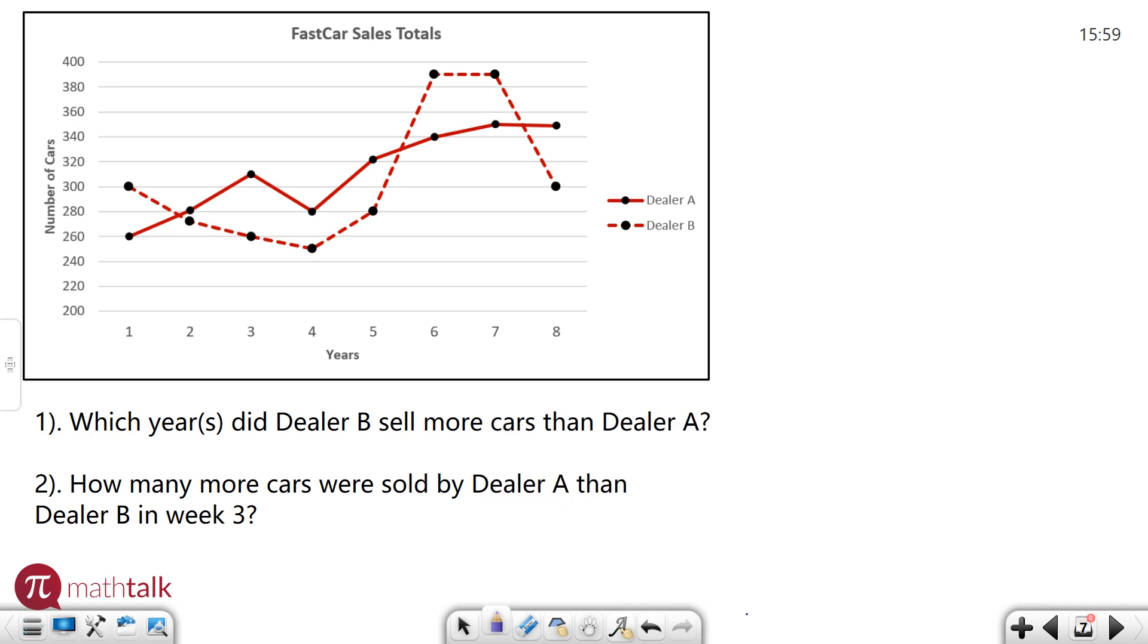So dealer B needs to be higher than dealer A, which means the dotted line has to be higher than the solid line. So let's find all those points. The dotted line is higher, let's see, here and here. Looks like everywhere else the solid line wins. So the years for that are going to be, let's see, we have year one, we have year six and seven. Perfect. All right.